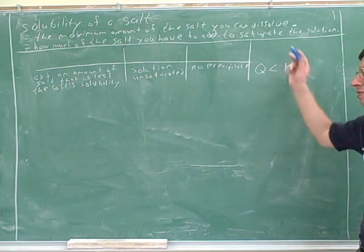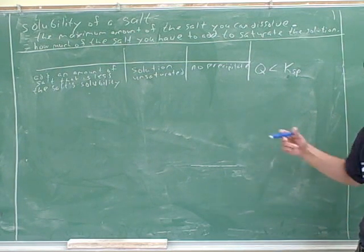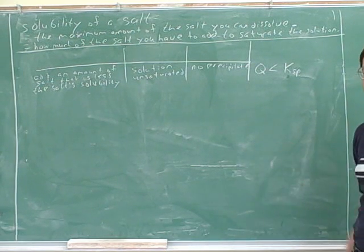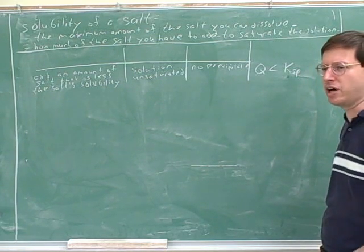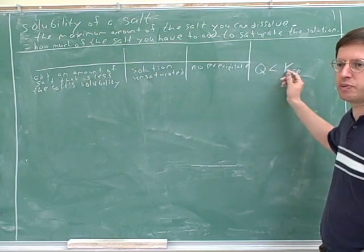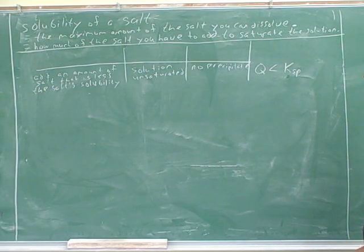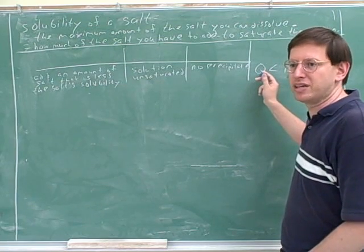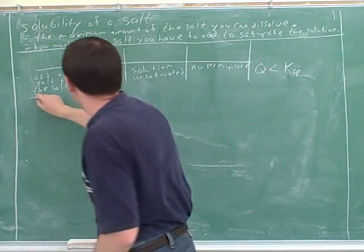A good definition for solutions: Q tells us where we're at, and Ksp tells us the furthest we can go. Roughly speaking, Q tells us how much we've dissolved, and Ksp tells us the most that we can dissolve. So far, we haven't dissolved as much as we could. Remember that Q is based on the ions — the more you've dissolved, the bigger Q would be; the more ions there are, the bigger Q would be.